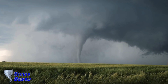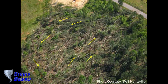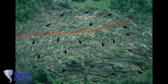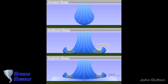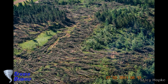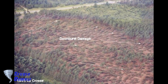A downburst may be confused with a tornado, where high-velocity winds circle a central area and air moves inward and upward. Tornado damage tends towards convergent damage consistent with rotating winds. By contrast, in a downburst, winds are directed downward and then outward from the surface landing point. Downburst damage will radiate from a central point as the descending column spreads out when hitting the surface.